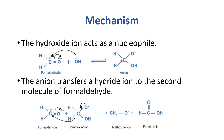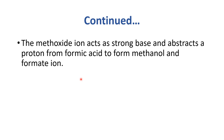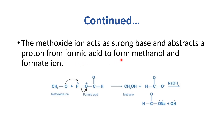Not just a hydrogen, but a hydride ion is transferred to the carbonyl carbon. Bonds rearrange and we get a methoxide ion plus formic acid. In the next step, the methoxide ion acts as a strong base and extracts a proton from formic acid to form methanol and formate ion.